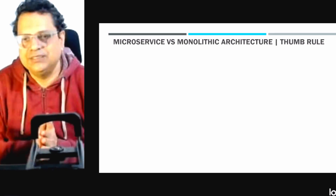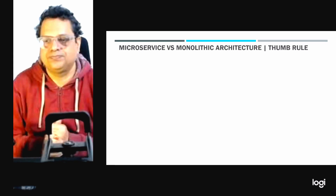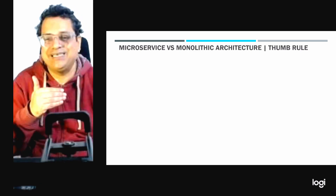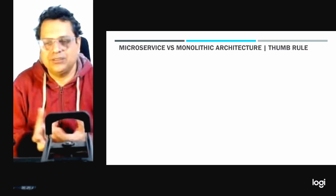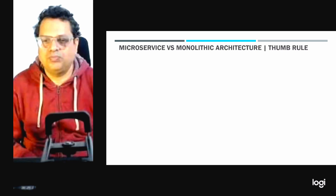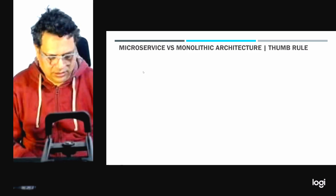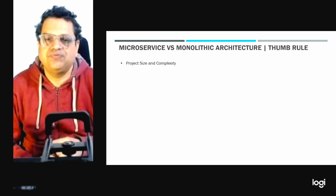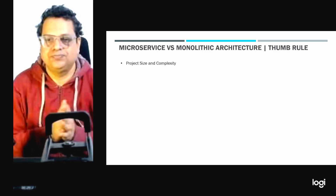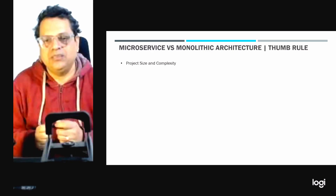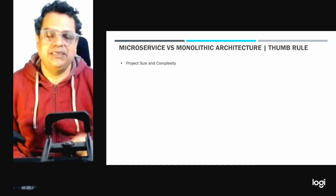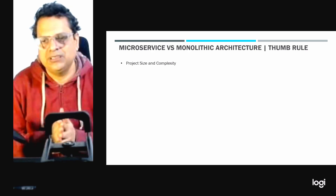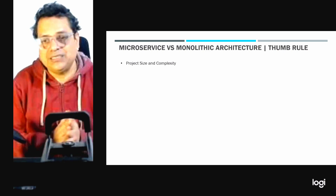Now let's look at thumb rules for identifying the right architecture between monolithic and microservice. The key factors to consider: the first is project size and complexity. Microservices are usually suited for large-scale, complex applications with multiple evolving components, whereas monolithic architecture is preferable for small to medium-sized applications or when simplicity and quick development are priorities.